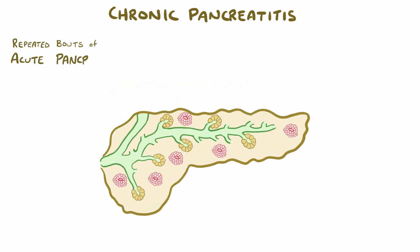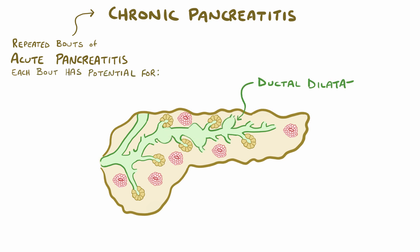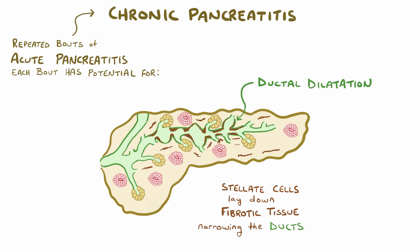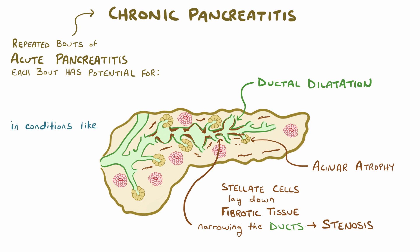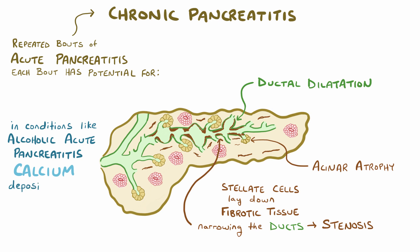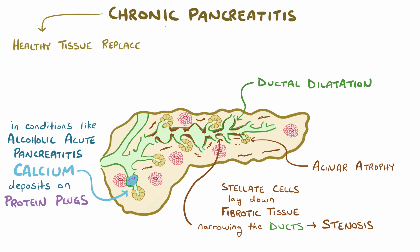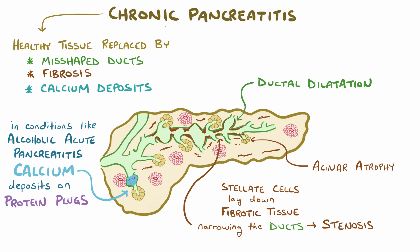Repeated bouts of acute pancreatitis can progress to chronic pancreatitis. With each bout, there's potential for ductal dilatation and damage to pancreatic tissue. As part of the subsequent healing process, pancreatic stellate cells lay down fibrotic tissue, causing narrowing or stenosis of the ducts, as well as acinar cell atrophy. In addition, in conditions like alcoholic acute pancreatitis, calcium deposits of various sizes can accumulate on the plugs that form in the ducts. This gradual process of healthy pancreatic tissue being replaced by misshapen ducts, fibrosis, and calcium deposits is chronic pancreatitis.